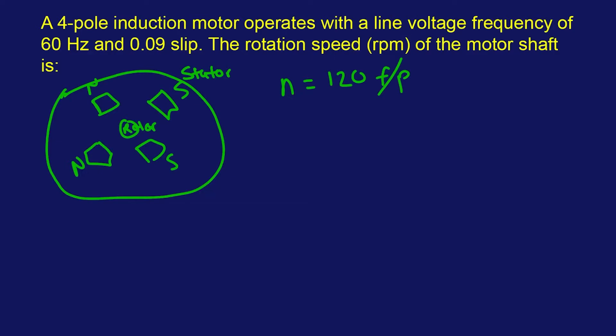And then the P are the number of poles in the motor. Here we're given that P equals four. So let's just write those things down. So four, and then F is in Hertz, which is fine for this equation.